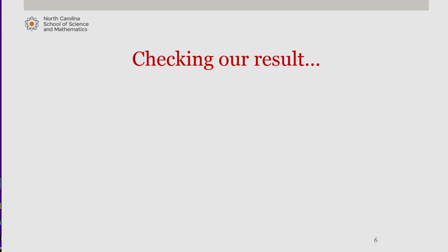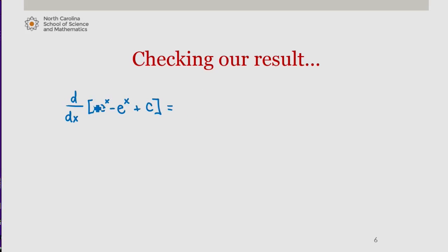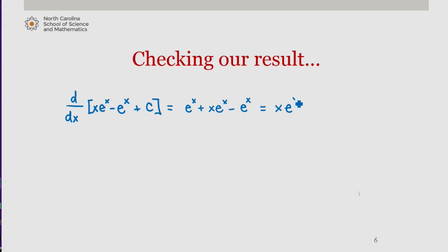We can check our results by differentiating. Let's take the answer we arrived at and check that when we differentiate, we obtain the integrand of our original problem. Differentiating x e to the x by the product rule, we get e to the x plus x e to the x, minus the derivative of e to the x which is e to the x, plus the derivative of a constant which is 0. This gives us x e to the x, which is our original integrand.